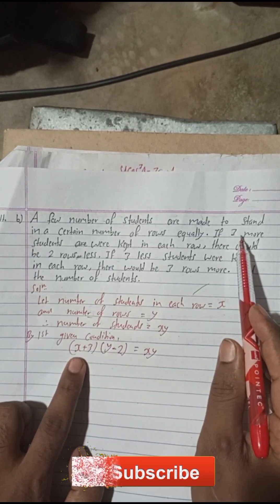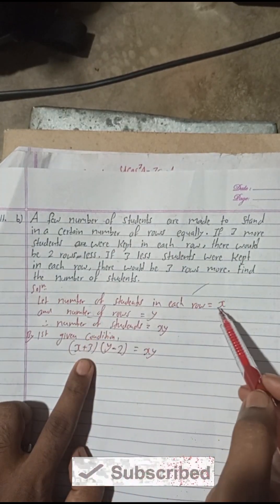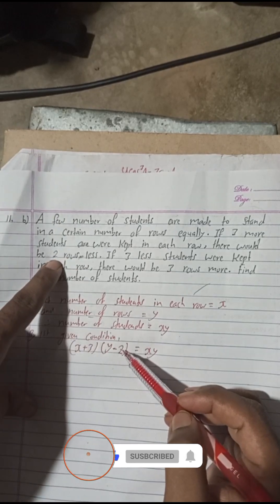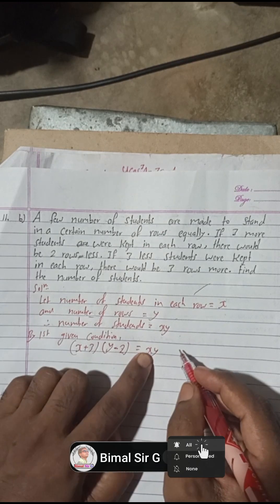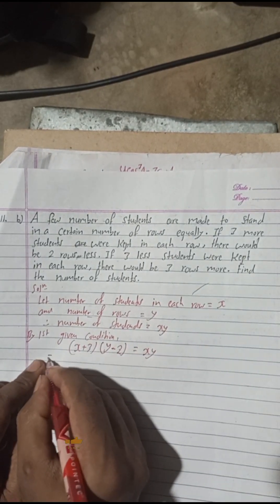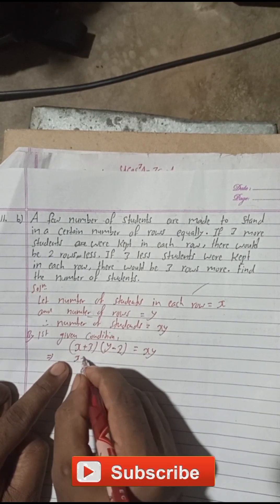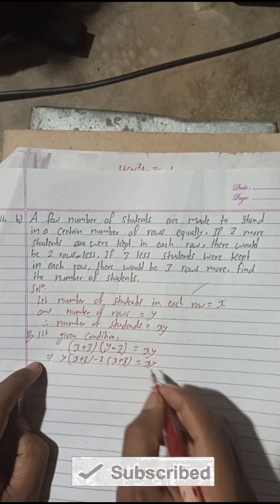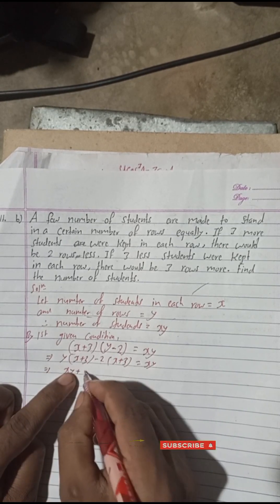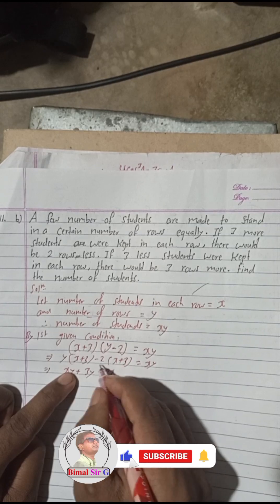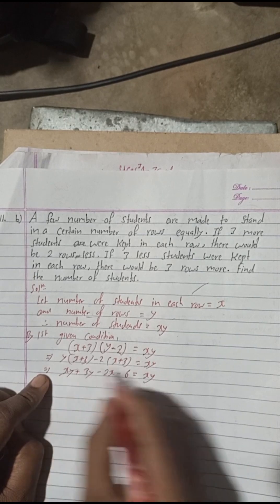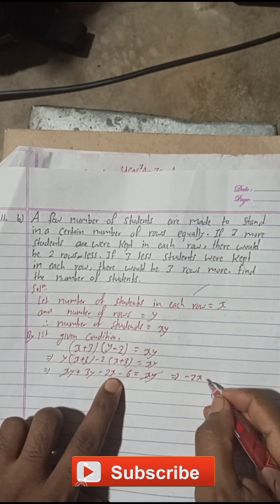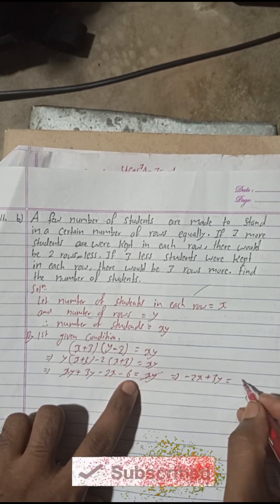We write: (x + 3)(y − 2) = xy. Expanding: xy + 3y − 2x − 6 = xy. The xy terms cancel, so we get: −2x + 3y = 6. This is Equation 1.